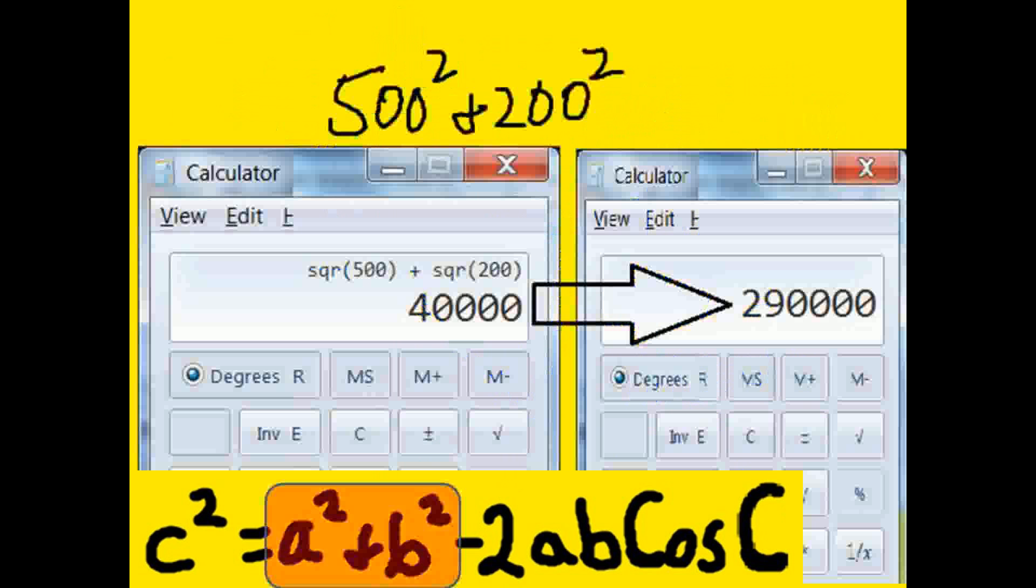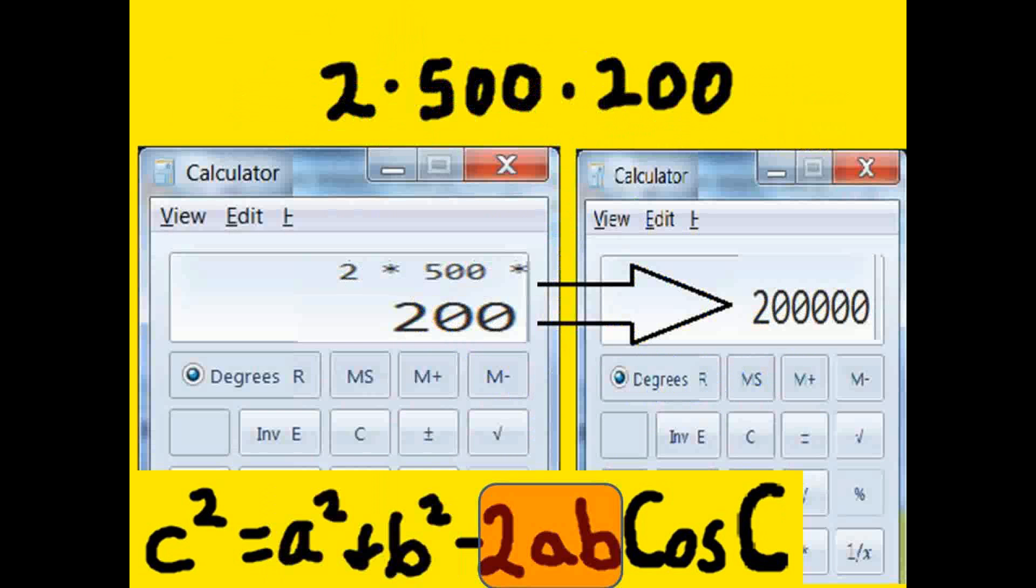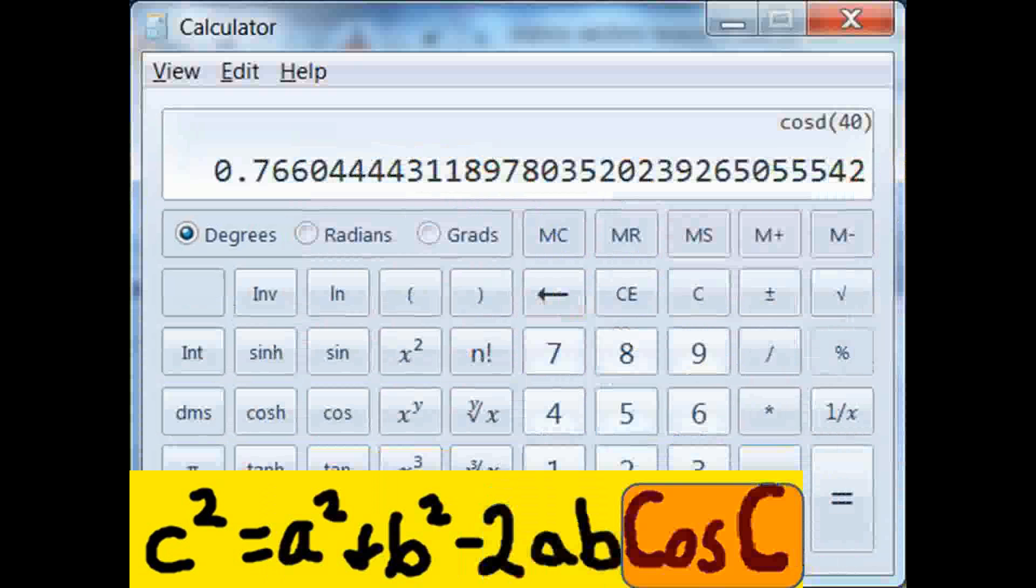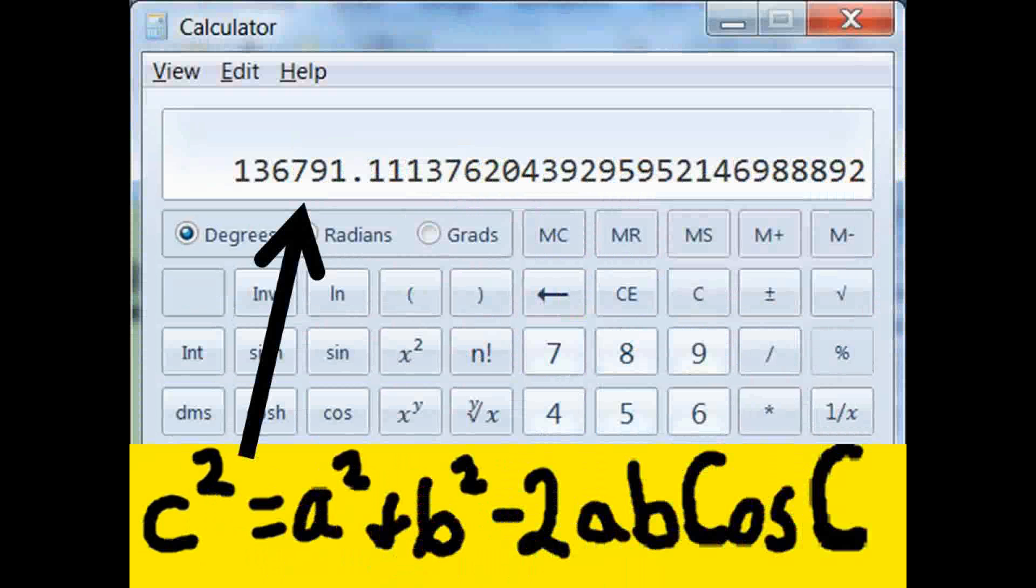A squared plus b squared gives us 290,000. 2 times a times b gives us 2 times 500 times 200, and that's 200,000. The cosine of 40 gives us this number: 0.136791...